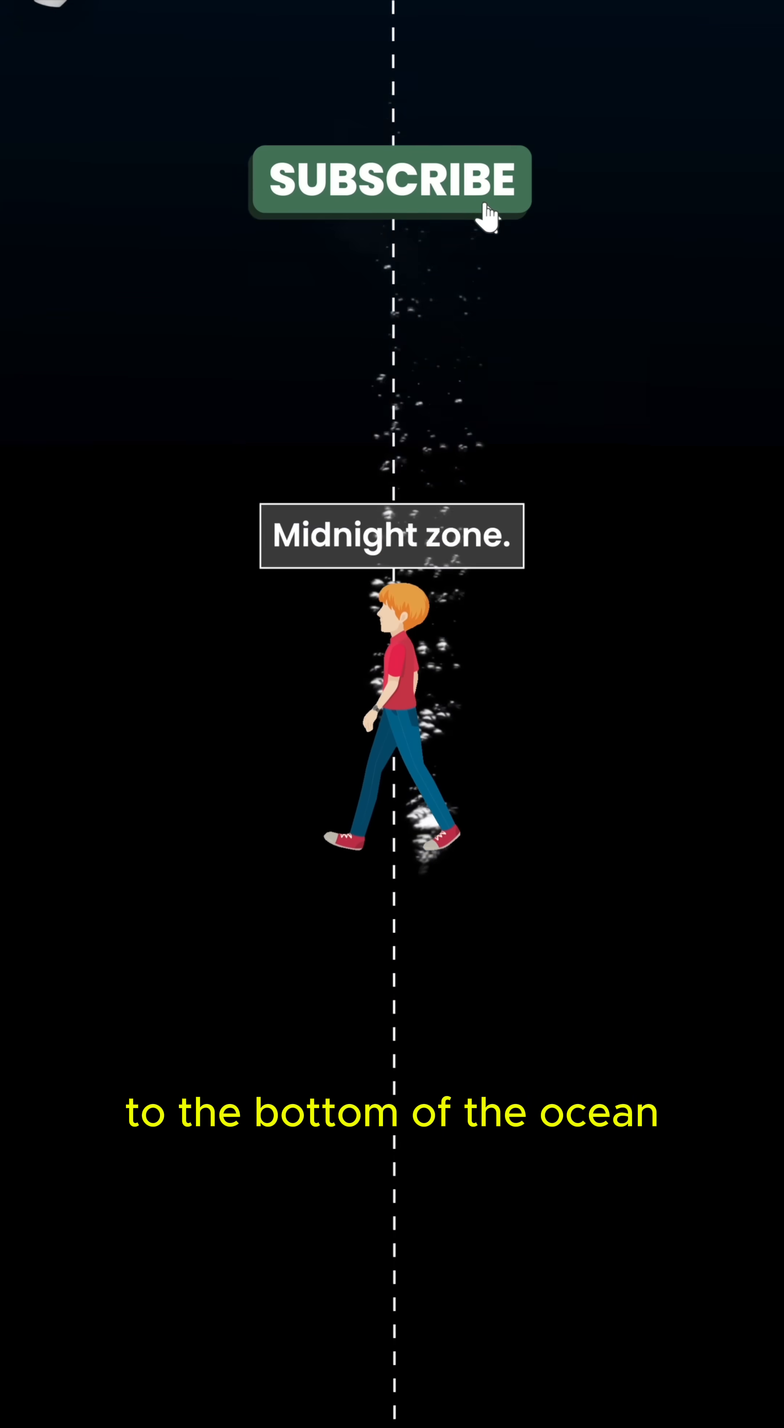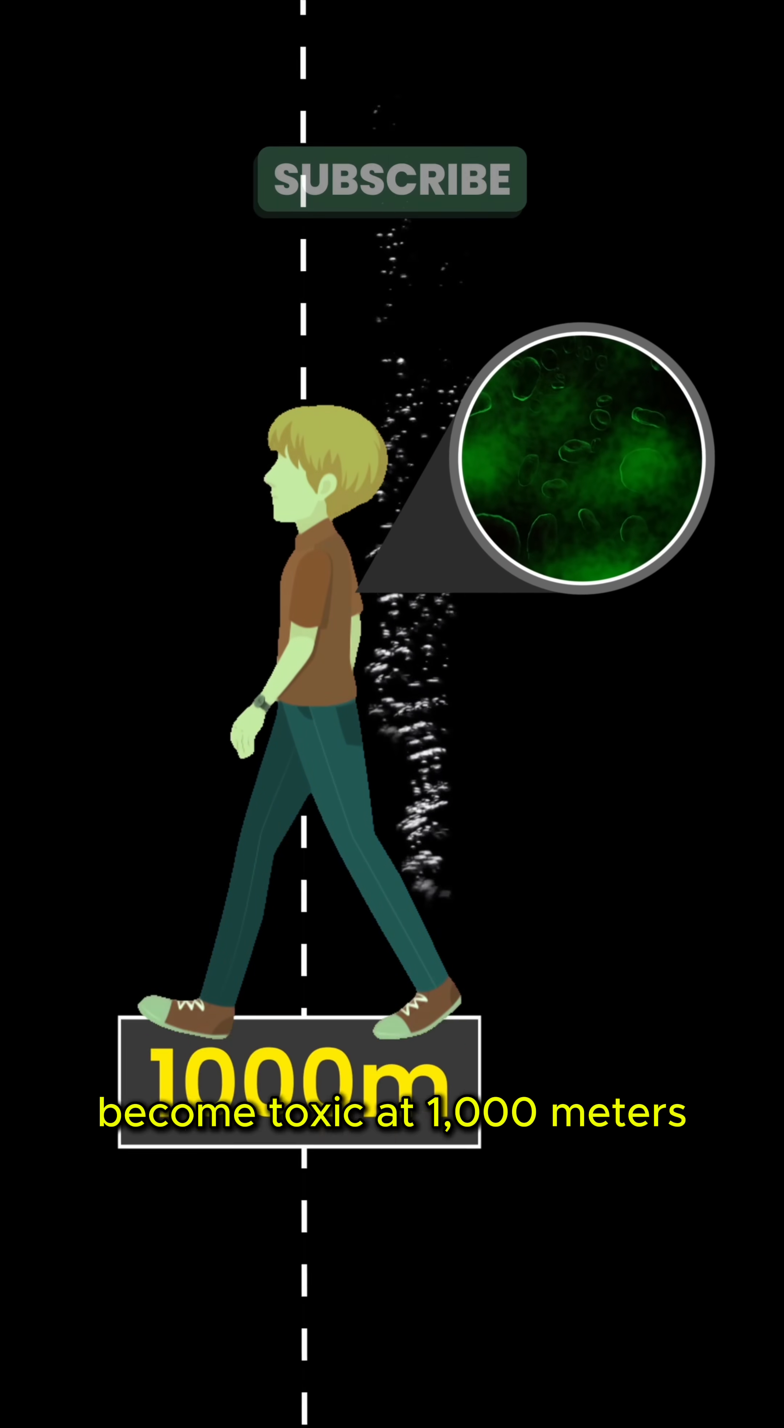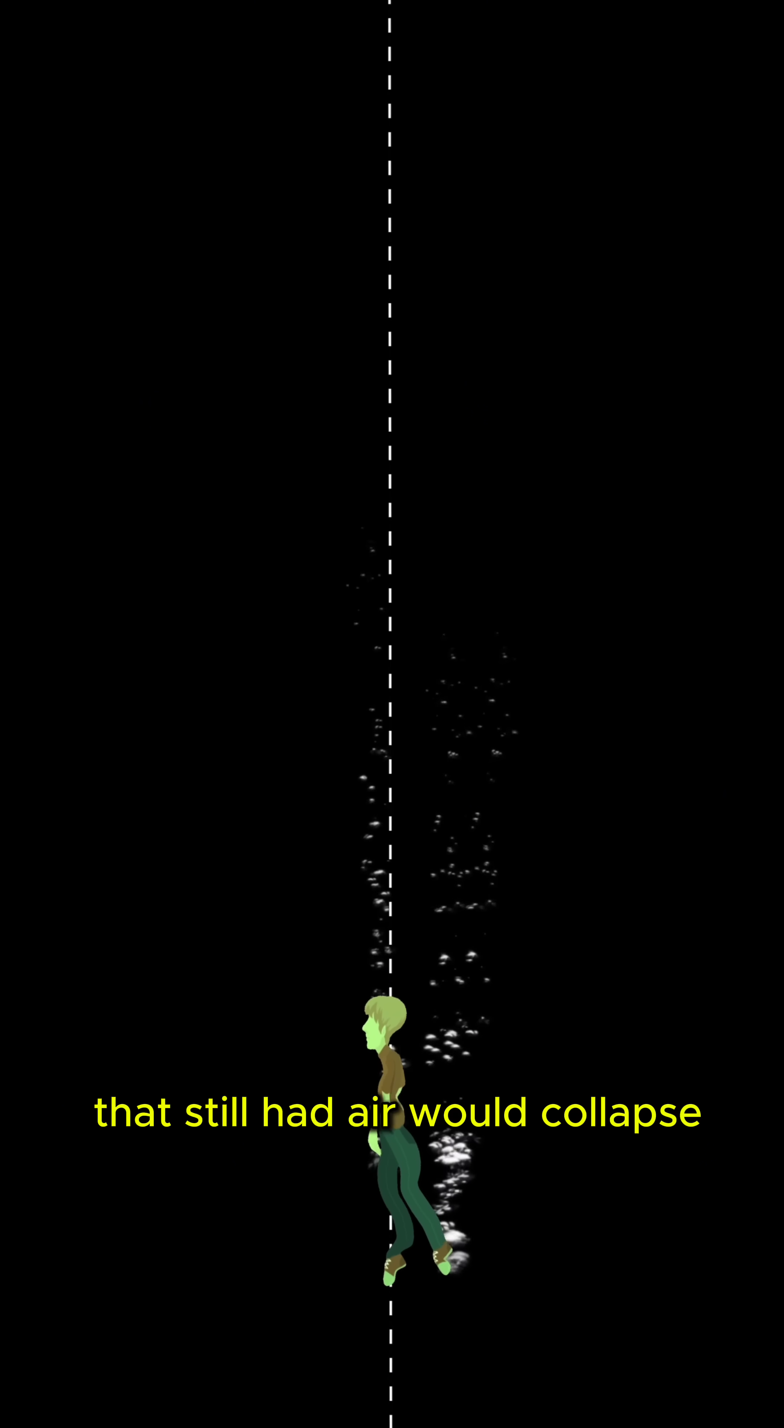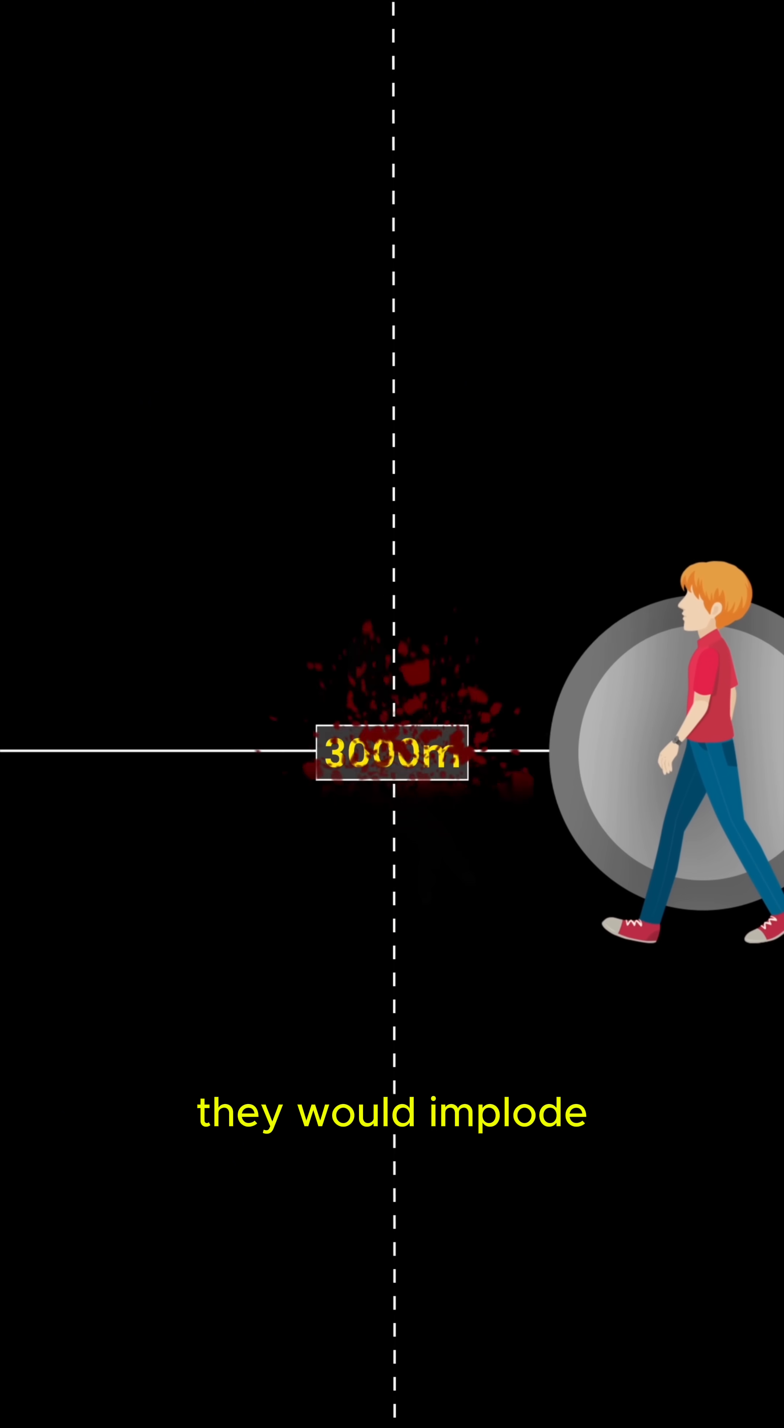The person diving to the bottom of the ocean would have gases in their blood become toxic at 1000 meters, and any part of the body that still had air would collapse. Then at around 3000 meters, they would implode.